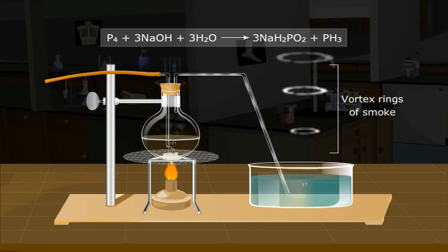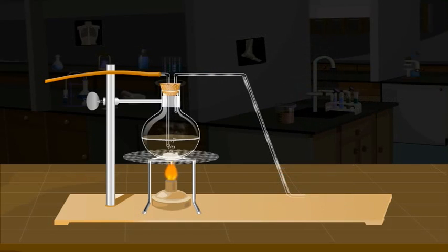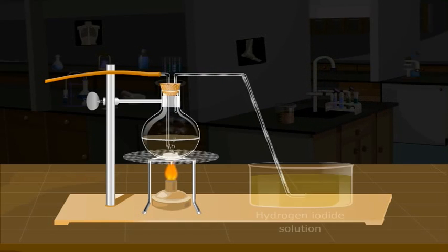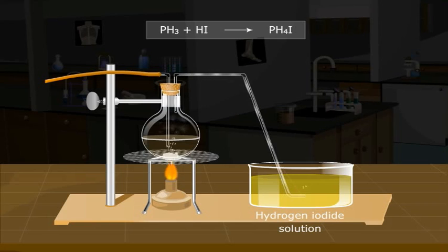Therefore it's extremely important to purify the gas. How do we do that? It is absorbed in hydrogen iodide to form phosphonium iodide PH4I. Phosphine can later be obtained from phosphonium iodide by treating it with KOH.